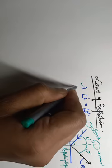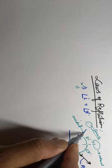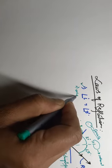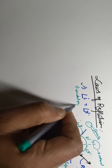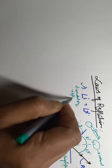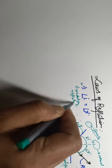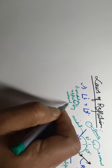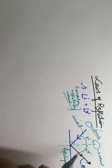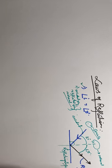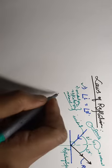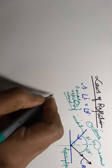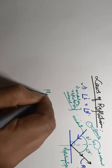Rule two: the incident ray, the reflected ray, and the normal — all three lie in the same plane. So this is the law of reflection. Today, before we move on to the next topic, let us understand what a plane mirror is.